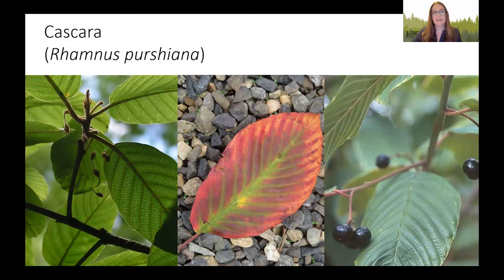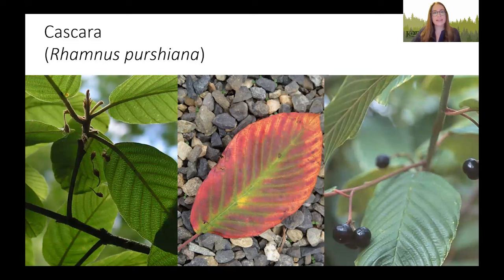Next, cascara — a deciduous tree with deeply veined leaves that produce beautiful fall color. Insect-eating species are attracted to cascara, like kinglets, chickadees, and nuthatches. The yellow to red berries turn black when ripe and attract many more birds, including grosbeaks, Steller's jays, robins, and tanagers. This is a great tree for birds. The berries are not palatable for humans and have a laxative effect, so best to leave them for the birds. Cascara grows in full sun to partial shade in moist, uncompacted soils.